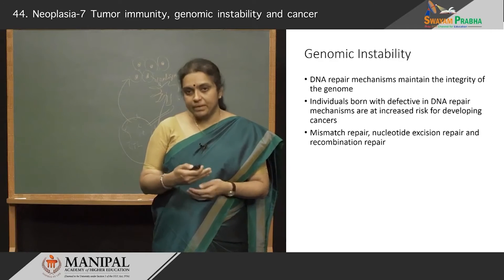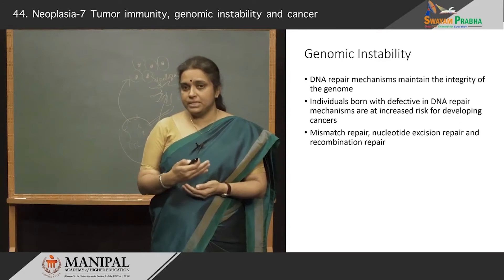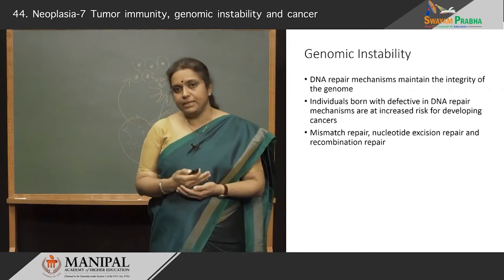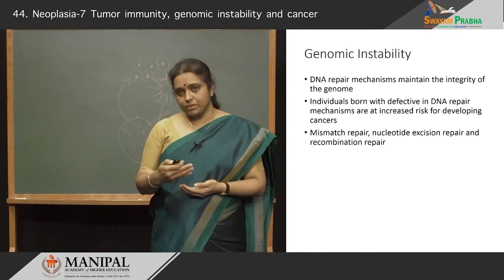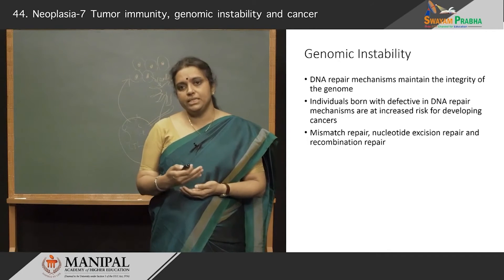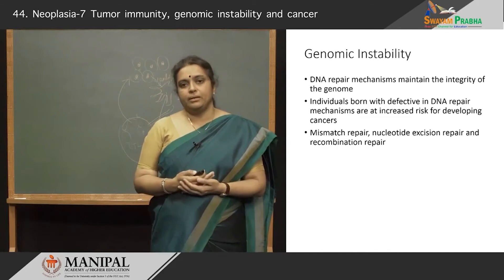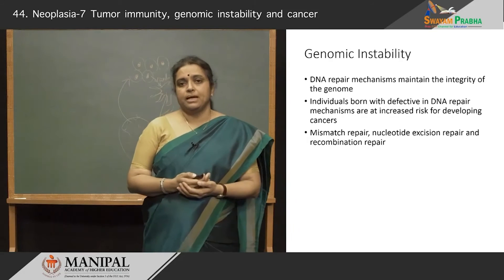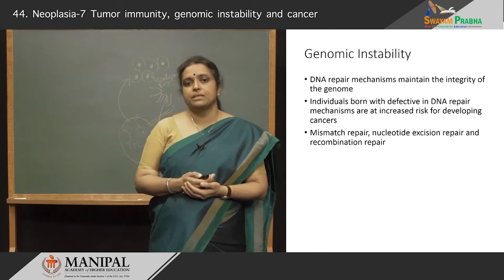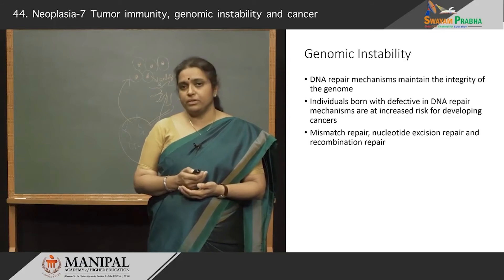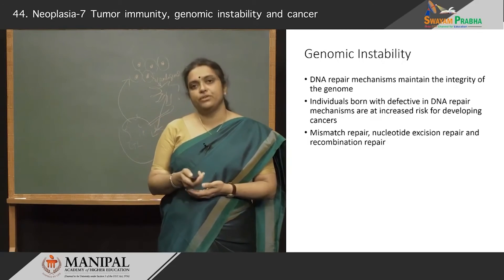Tumor cells are rapidly dividing, which is why they do not have a very stable genome, and DNA repair mechanisms maintain the integrity of the genome. The cells in our body are continuously dividing; the DNA is continuously replicated, and there are bound to be errors when this replication occurs. The human body has many mechanisms by which these DNA errors are repaired, and individuals born with defective DNA repair mechanisms are at increased risk for developing cancers. These repairs can be of three types: mismatch repair, nucleotide excision repair, and recombination repair.